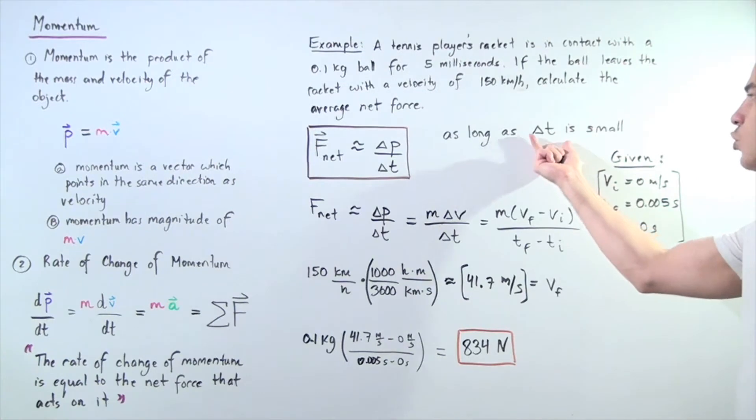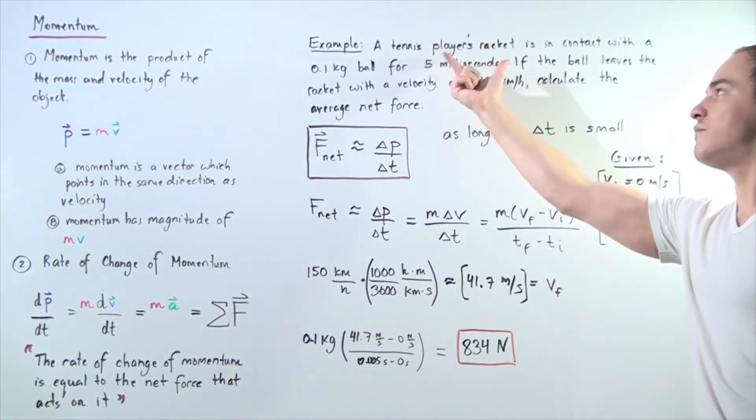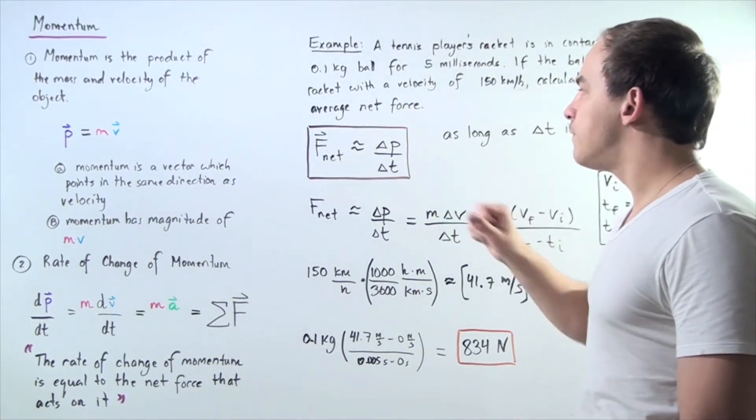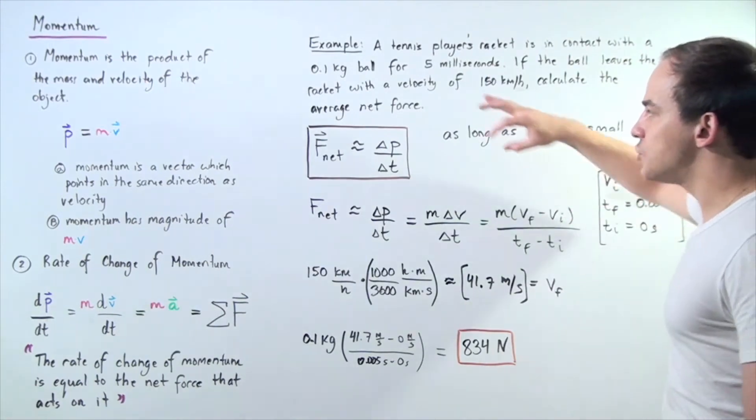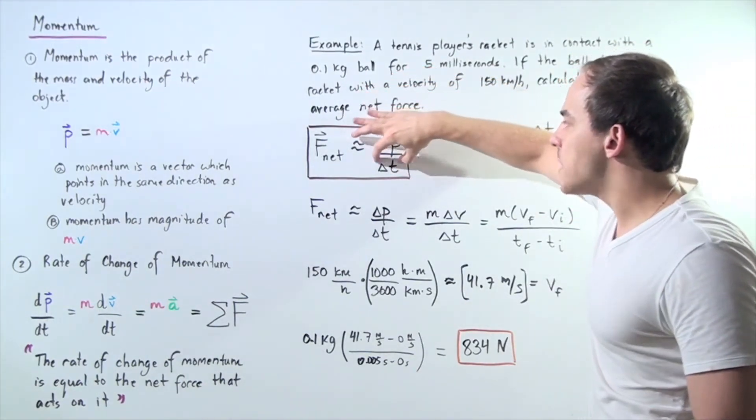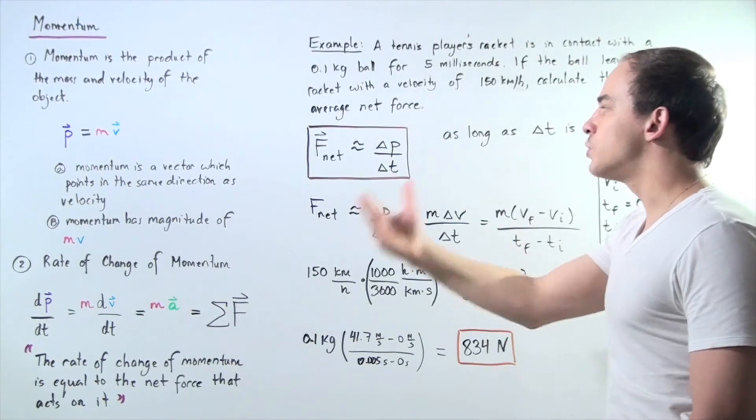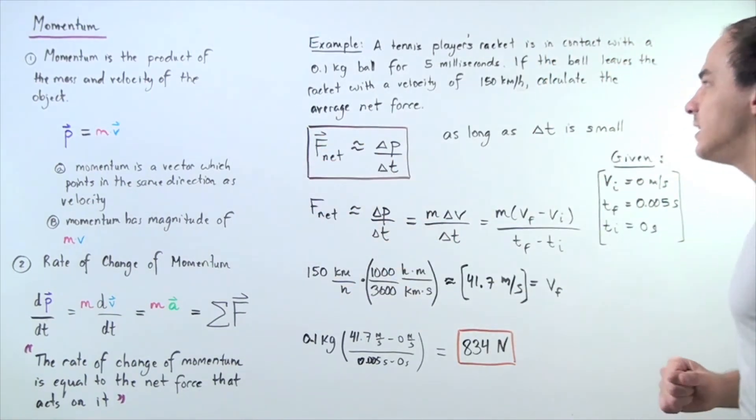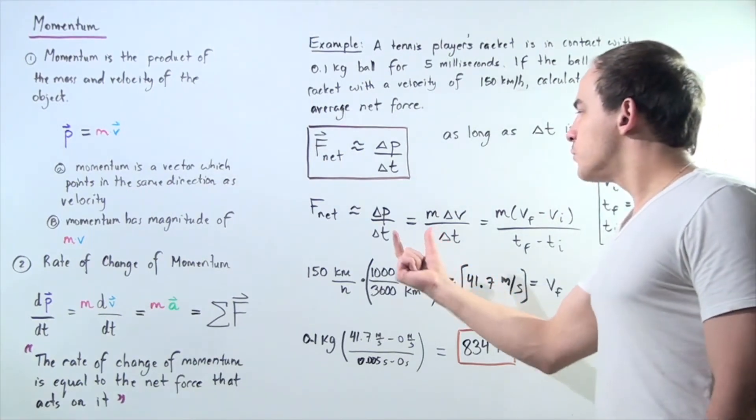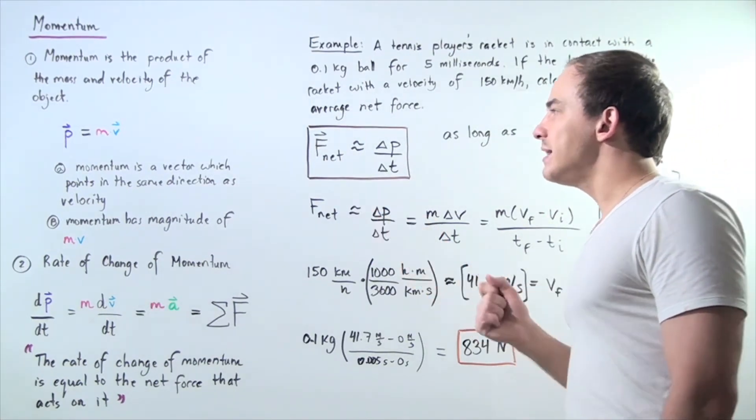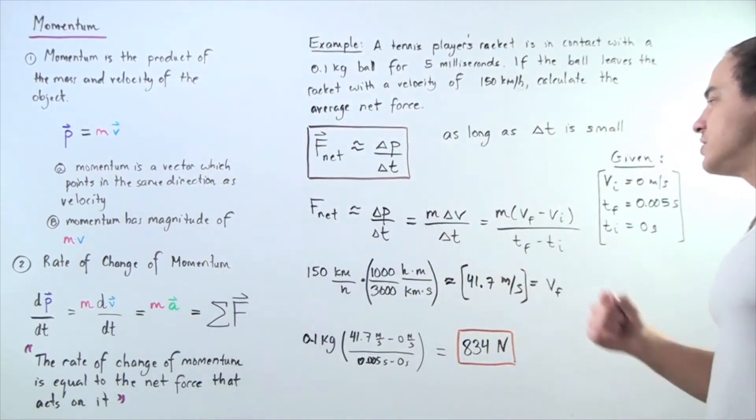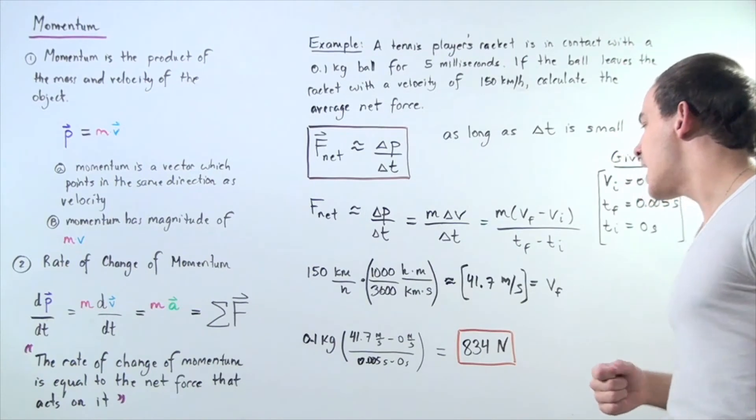As long as we choose a very small time interval, which in this case is 5 milliseconds, we can approximate the net force using the following equation. The change in momentum divided by a very small change in time is approximately equal to the average net force acting on the object, our tennis ball. We can replace the change in momentum with the following formula: mass times change in velocity divided by a very small change in time.